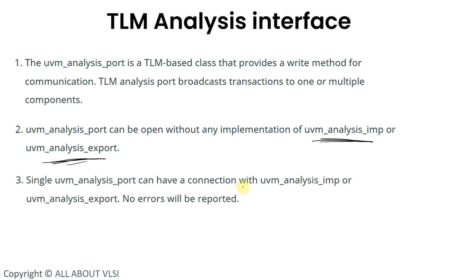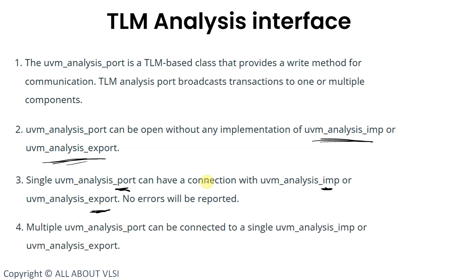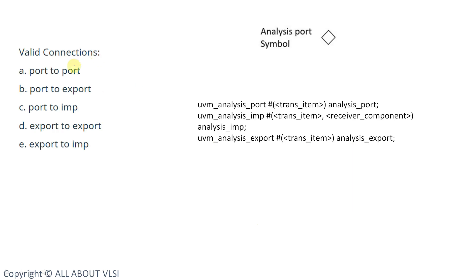A single UVM analysis port can have a connection with UVM analysis implementation or UVM analysis export. Using a single port it can be connected to an implementation port as well as to an export, and there will be no errors reported. Multiple UVM analysis ports can be connected to a single UVM implementation port or UVM analysis export — that is the broadcasting. The valid connections are: port to port, port to export, port to implementation port, export to export, and export to implementation port. You cannot connect an implementation port to an export.